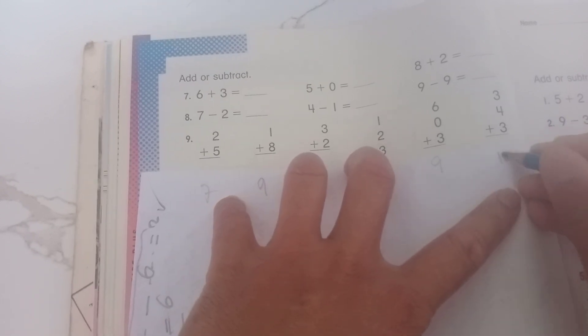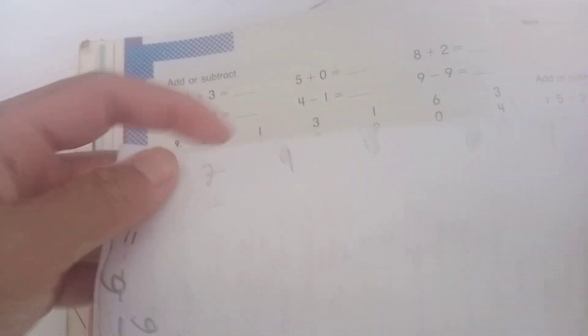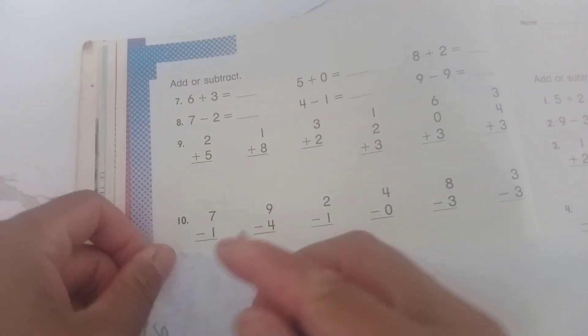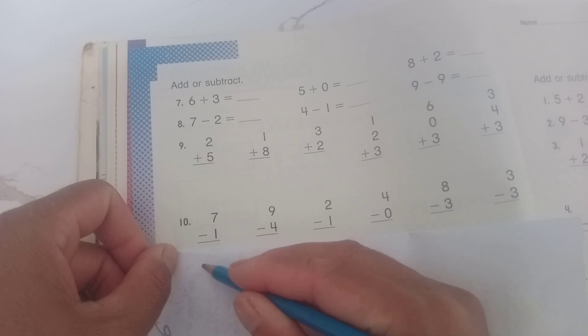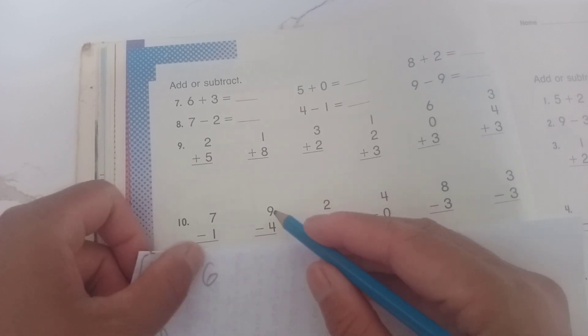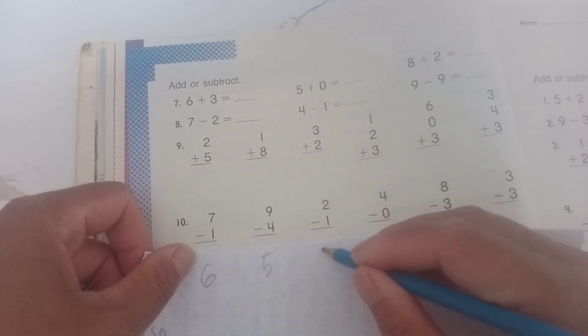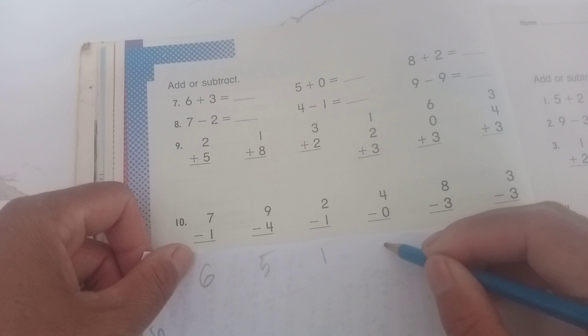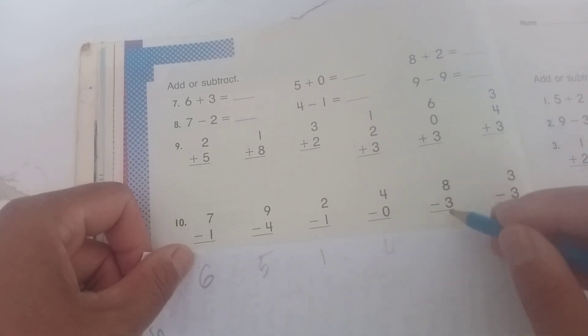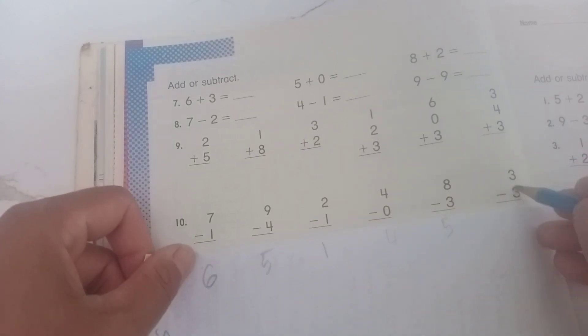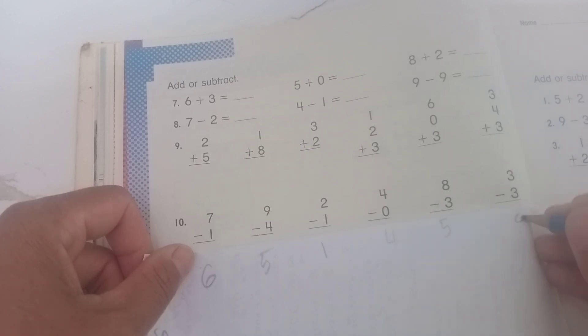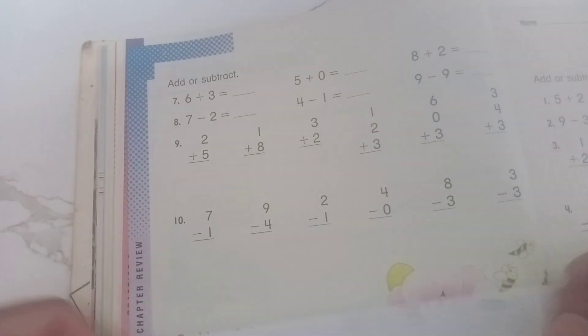Number ten: seven minus one equals six, nine minus four equals five, two minus one equals one, four minus zero equals four, eight minus three equals five, three minus three equals zero. You can see. Problem solving: write the subtraction sentence and solve.